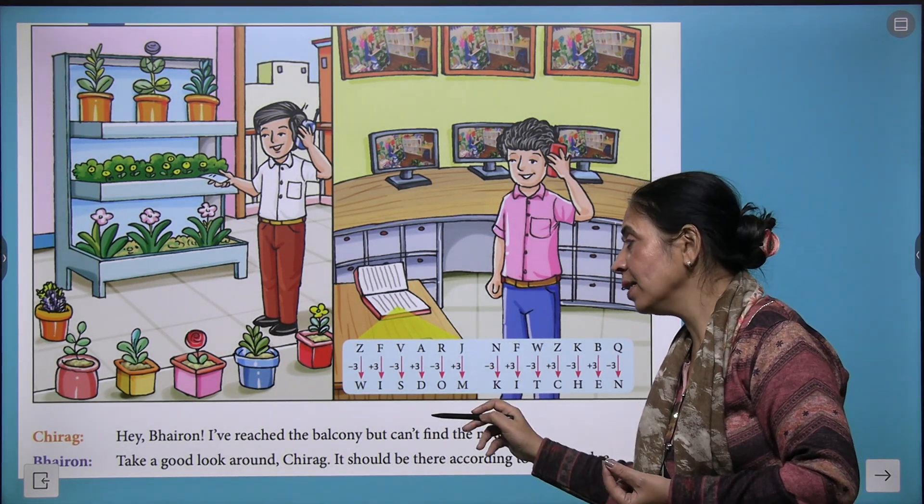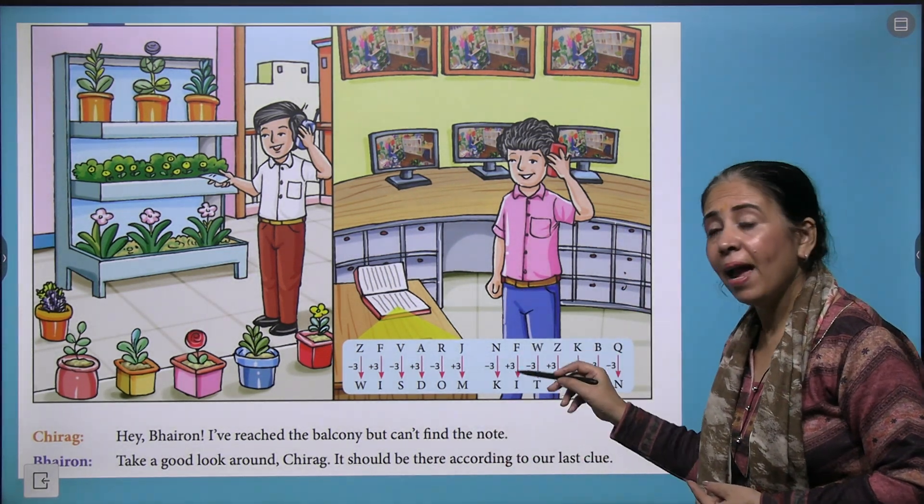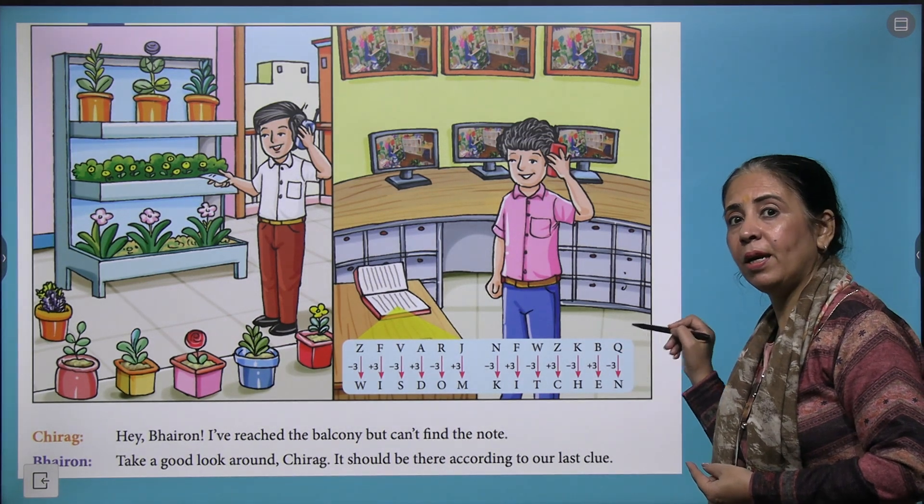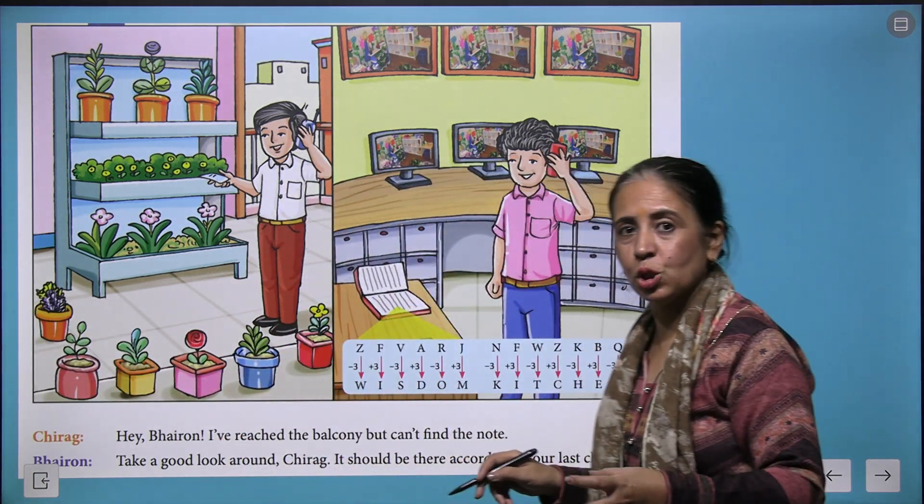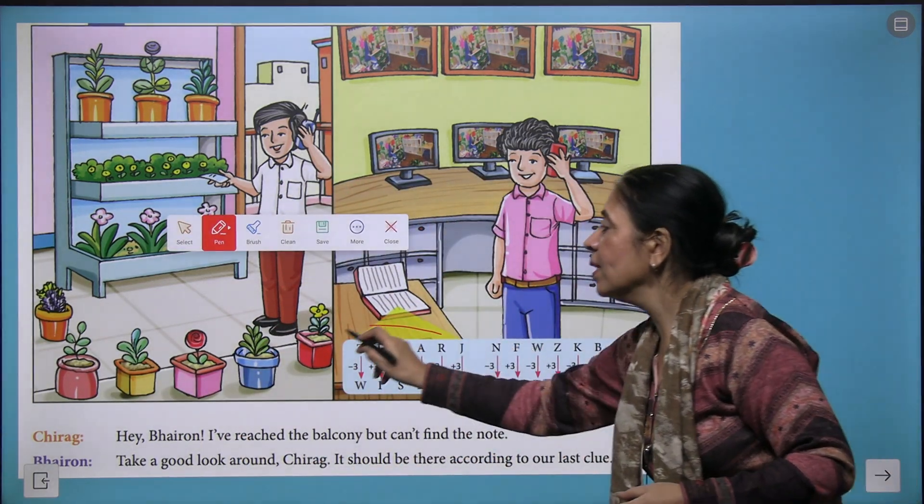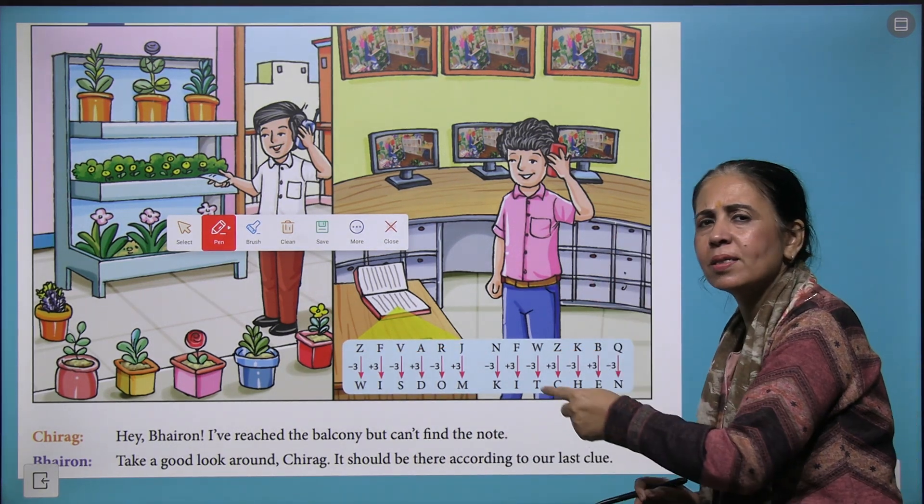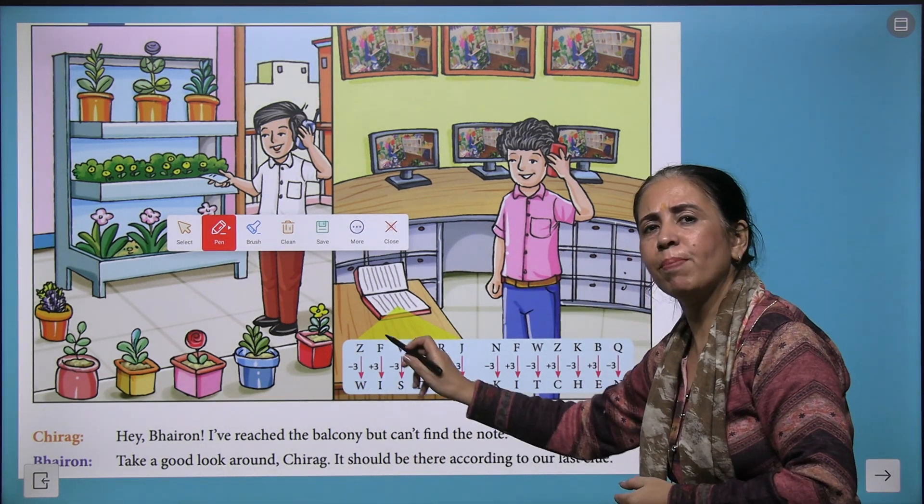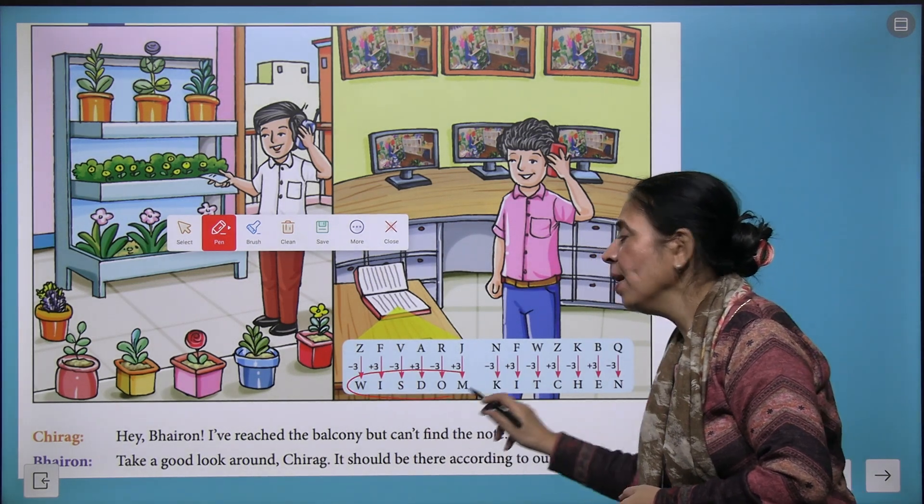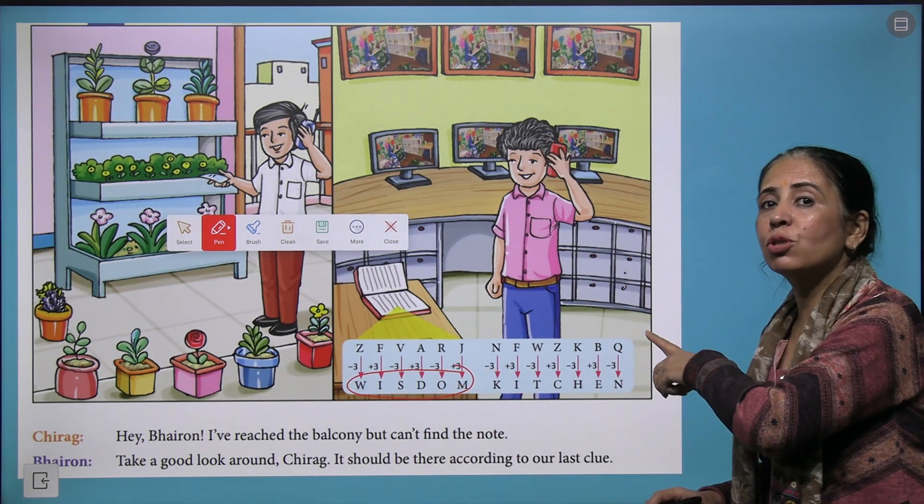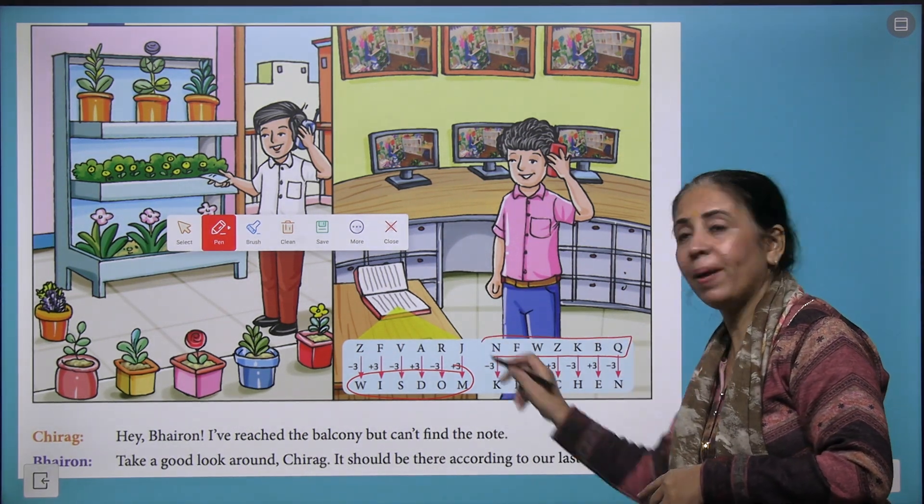The message was that ZFVARJ stands for wisdom. Now what is the code for NFWZKBQ? We need to search a logic—what logic actually converts this message into wisdom. Here we got the symmetry. We have alternate minus 3, plus 3, minus 3, plus 3, and this way the code is created.